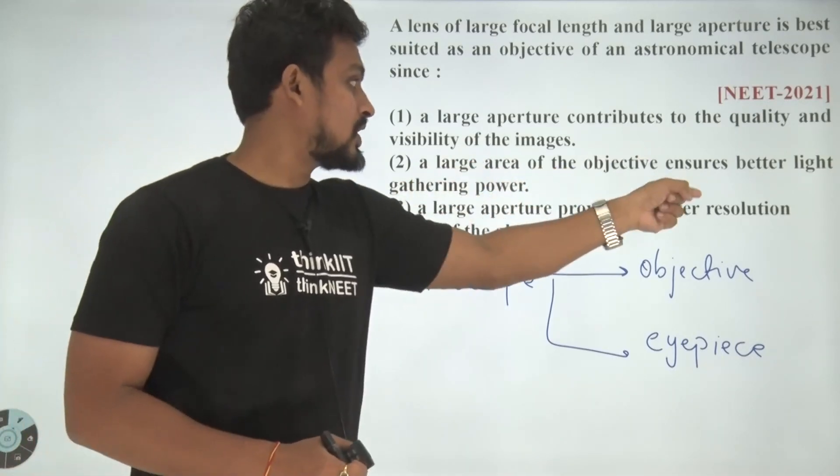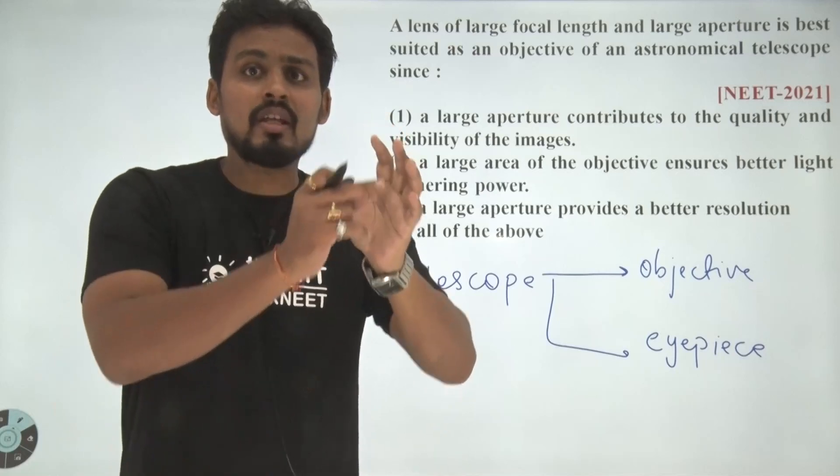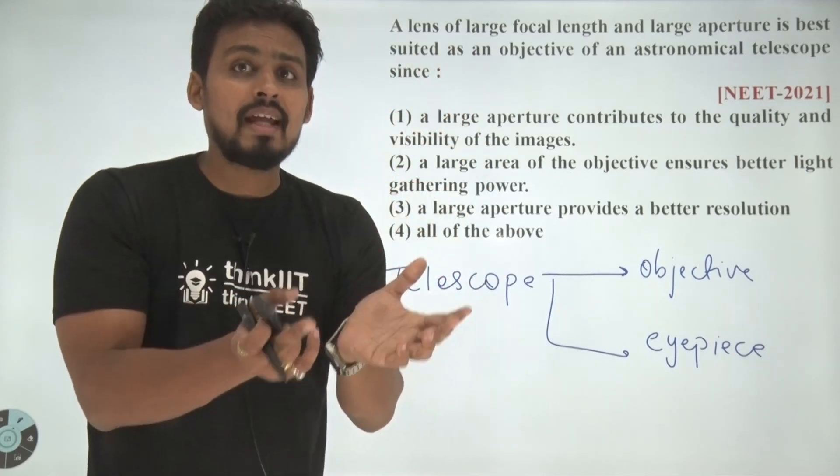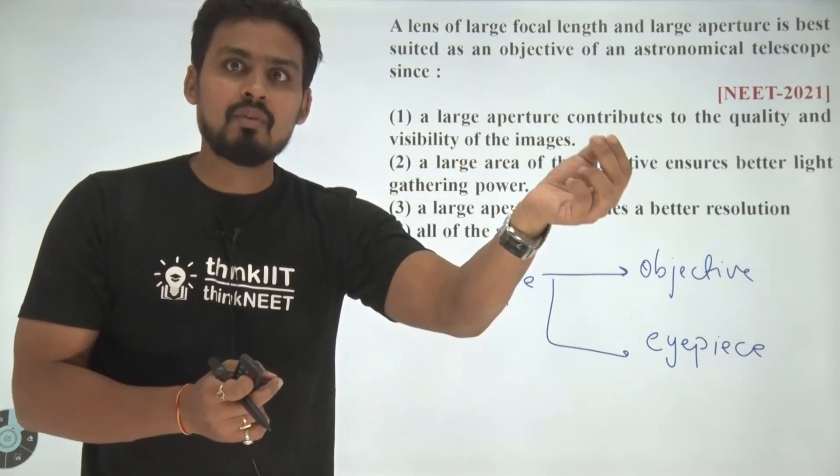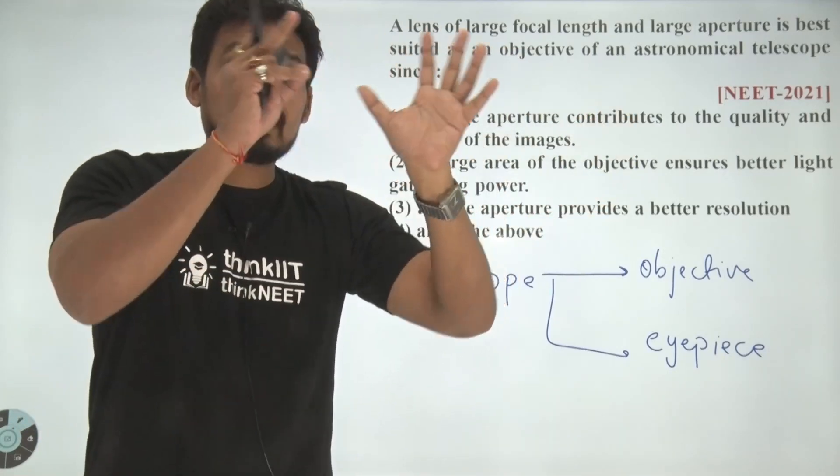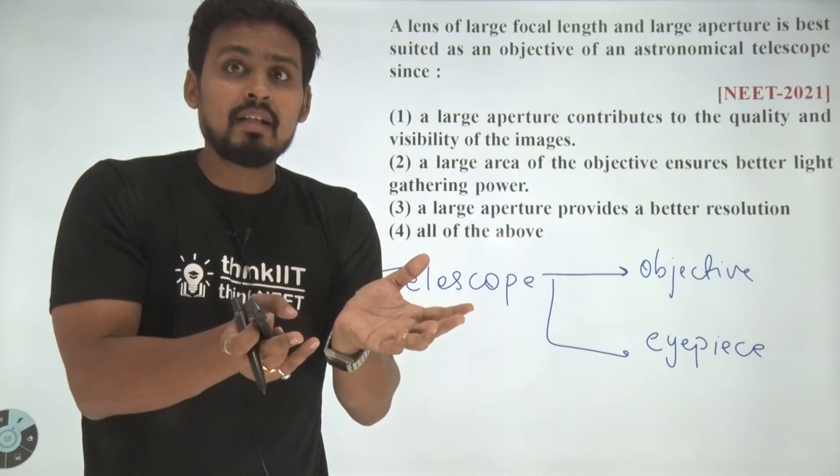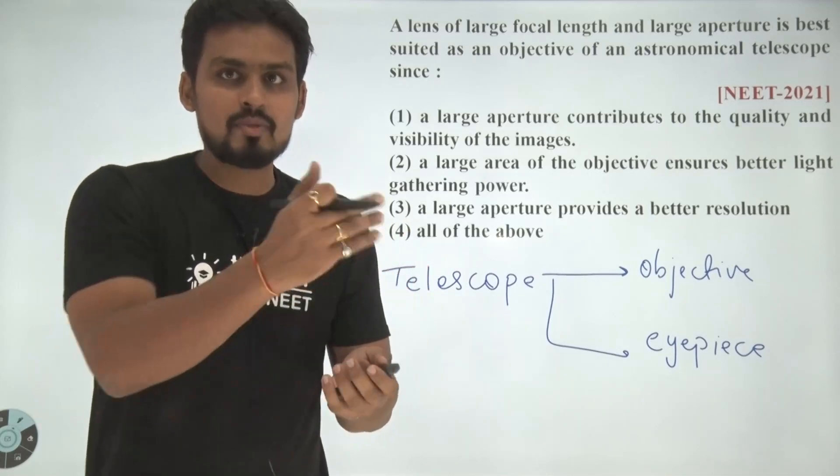A large area of the objective ensures better light gathering power. Of course, if the aperture area is large, more light will be gathering from the object. That means we can capture more light to view that particular object in the form of image.